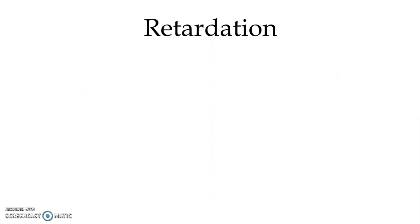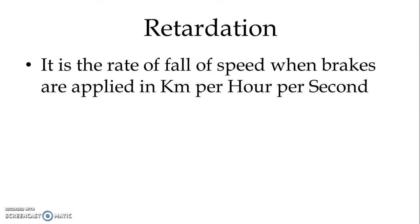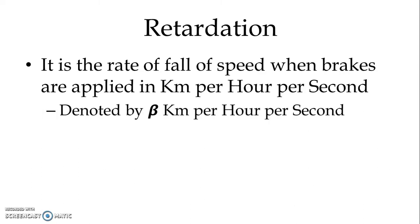In the same way, we have retardation. It is the rate of fall of speed when brakes are applied. In acceleration we consider the rise of speed; in retardation it is the rate of fall of speed, and it is also measured in kilometers per hour per second. It is denoted by beta.